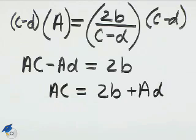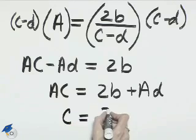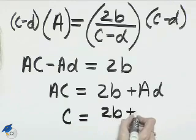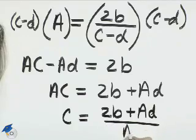And now if we divide all parts by A, we'll have C by itself. C equals 2B plus AD, all divided by A.